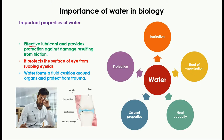Last but not least, water provides protection. It is an effective lubricant and protects against damage from friction. For example, it protects the surface of the eyes from rubbing eyelids — without water, this friction could damage the eyeball. Water also forms a fluid cushion around organs such as the knee joints and elbow joints, protecting them from friction and trauma.